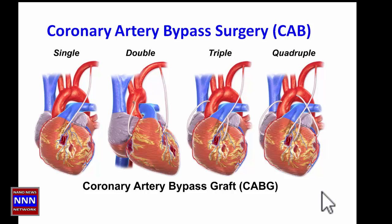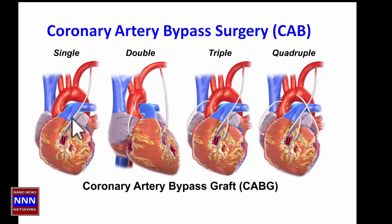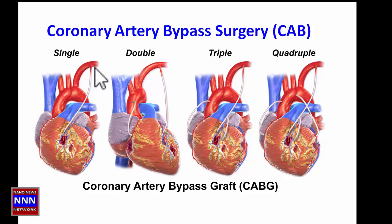You may have heard the terms single bypass, double bypass, triple bypass, quadruple bypass, and quintuple bypass. In the majority of cases, a single bypass uses the artery running in the chest wall, known as the LIMA, which is separated from the chest wall and its distal end is attached to the coronary artery beyond the blockage.